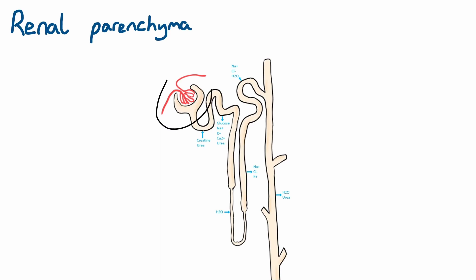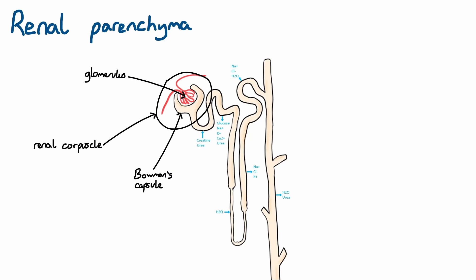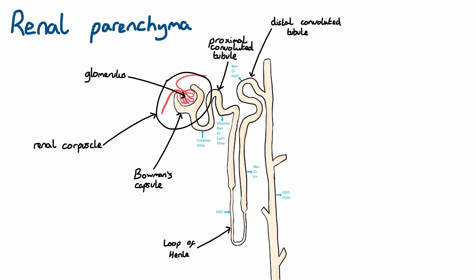Blood is filtered in the renal corpuscle, which is made of the glomerulus — a tuft of blood vessels — and the Bowman's capsule, which collects the filtrate from the blood. From here, the filtrate travels down the proximal convoluted tubule, the loop of Henle, and the distal convoluted tubule. Throughout these sections the contents of the filtrate is being altered through reabsorption and secretion of various molecules the kidney is trying to hold onto or remove from the body. Finally, the filtrate reaches the collecting duct before travelling, as urine, into the renal pelvis.